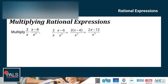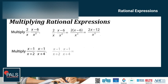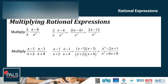Let's try another example. Multiply x minus 1 over x plus 2, times x minus 1 over x plus 4. Multiplying across, we have x minus 1 times x minus 1, over x plus 2 times x plus 4. The answer is x squared minus 2x plus 1, over x squared plus 6x plus 8.